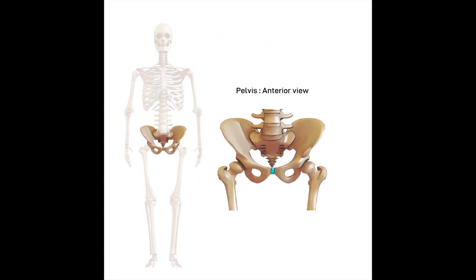Our pelvic girdle is very important. It transmits the whole weight of our upper body down through the legs to the ground, and plays a major role in ensuring the correct alignment of the spine, allowing us to maintain our neutral spine position. Unlike the pectoral or shoulder girdle, it needs to be strong, stable, and resistant to large ranges of movement. It is composed of two bones on each side, made up of three separate bones — the ilium, ischium, and pubic bones — which fuse together in adulthood.